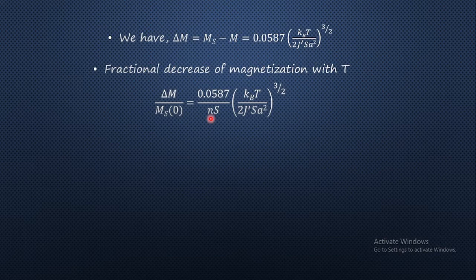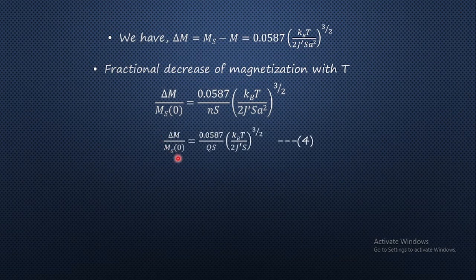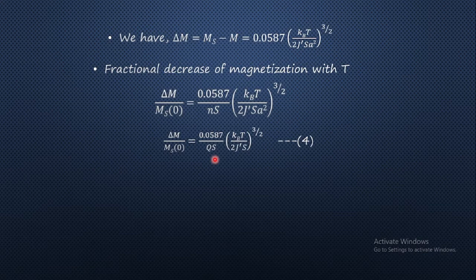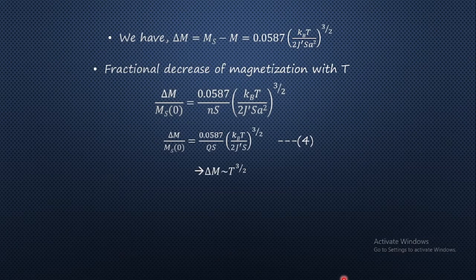Substituting N = q/a³, we get ΔM/Ms = 0.0587 divided by (q/a³ × S) into the magnon sum. Here a³ goes to the numerator and a² raised to 3/2 is a³ in the denominator, so both cancel out, and finally we get equation number 4. This equation number 4 is the result due to Felix Bloch and thus it is called Bloch T^(3/2) law, because the change in magnetization varies as T^(3/2).